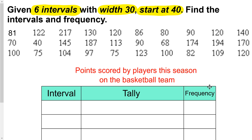We're going to start looking more in-depth at frequency tables now that we know how to use the interval column. I'm going to apply that to this data of points scored by players this season on the basketball team. I want six intervals with a width of 30 starting at 40, so the first thing to do is create the interval column, then we'll tally and count up those tallies for the frequency column.